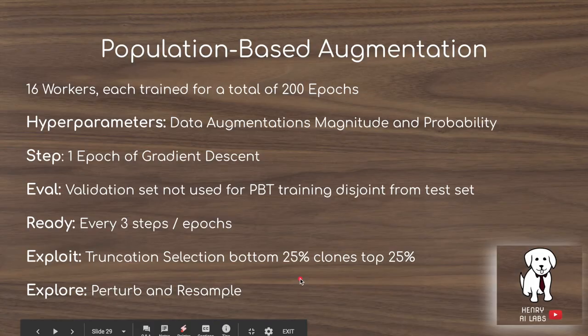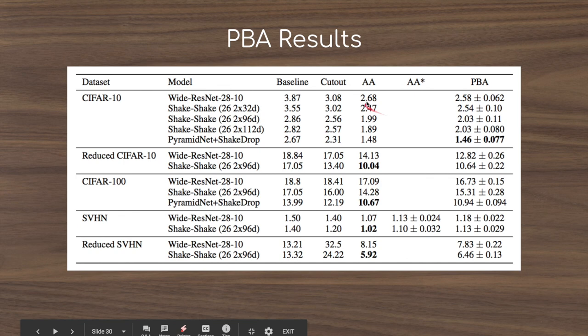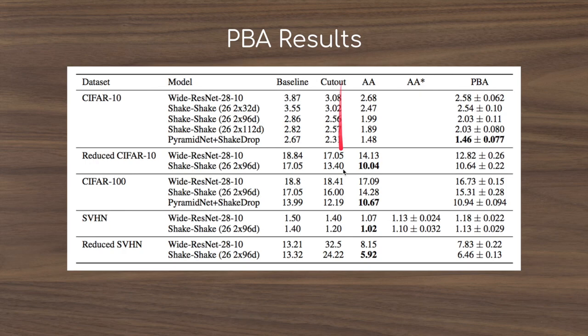The results from population-based augmentation show that it rivals AutoAugment even with far less compute. Compared against baseline augmentations and cutout — where a random patch of the input image is cropped out, similar to dropout in input space — PBA outperforms both. Across datasets including reduced CIFAR-10 (4,000 images), CIFAR-100, and Street View House Numbers, population-based augmentation performs similarly to AutoAugment and outperforms cutout and baseline augmentation strategies.